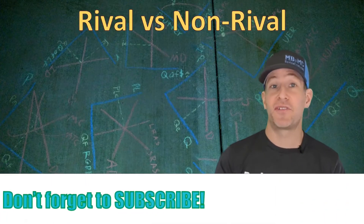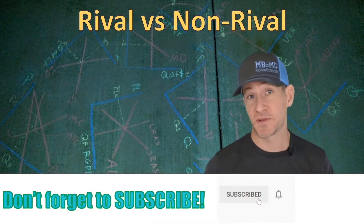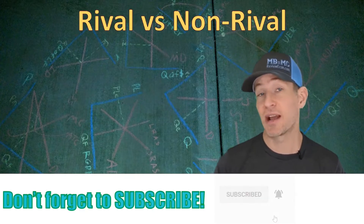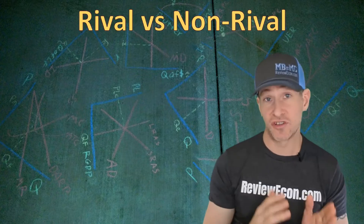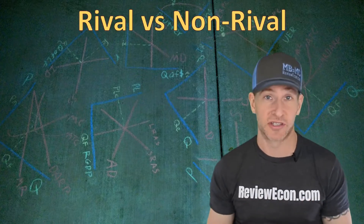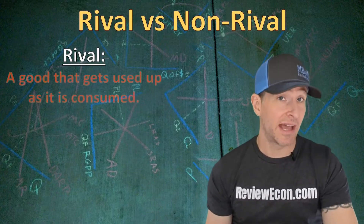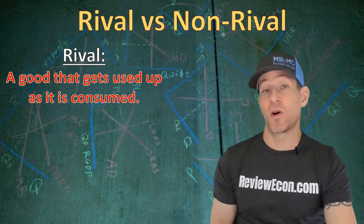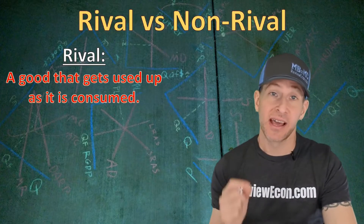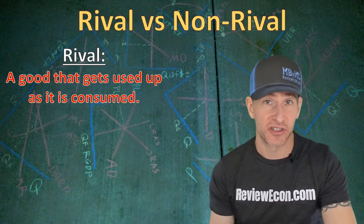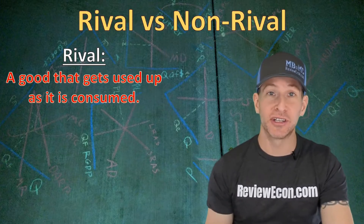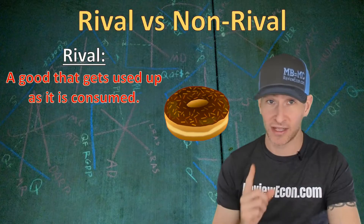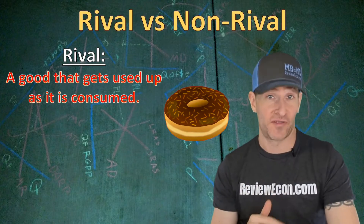This is our market failures unit, and public goods result in a specific type of market failure. In order to learn what public goods are, first we have to understand what rival versus non-rival goods are. A rival good is a good that gets used up as it is consumed — as one person uses it, there's less available for future consumers. An example of a rival good is a donut: if one person consumes the donut, there is one less donut for future consumers.